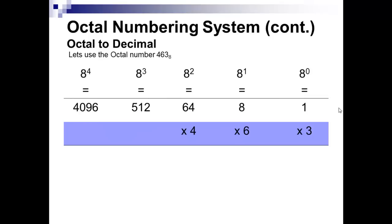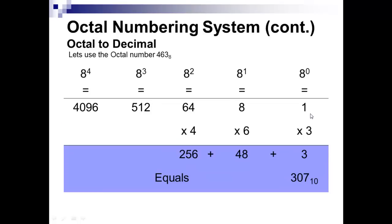Place your number 463 underneath the chart, then multiply and add: four times sixty-four, six times eight, and three times one. That gives you two-fifty-six plus forty-eight plus three, and the answer is 307 in decimal.